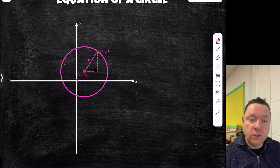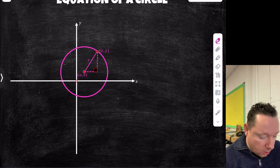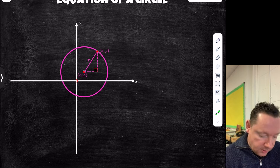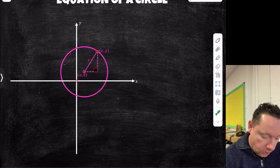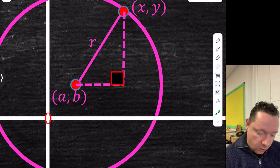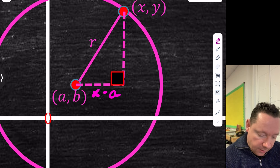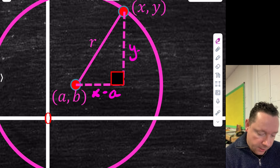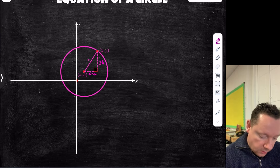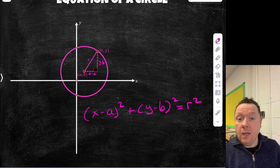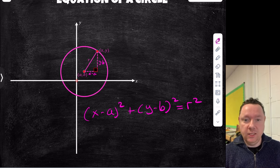Now let's look at circles with a centre that's not (0,0). I've drawn a circle with centre (a, b) and a point on the circle called (x, y). The horizontal distance between them is x − a, and the vertical distance is y − b. By Pythagoras, the equation of this circle is (x − a)² + (y − b)² = r². So for any centre (a, b), the equation of a circle is (x − a)² + (y − b)² = r².